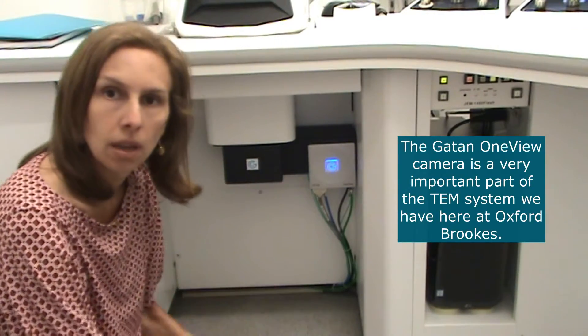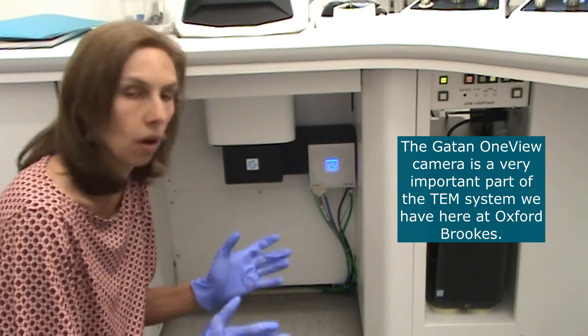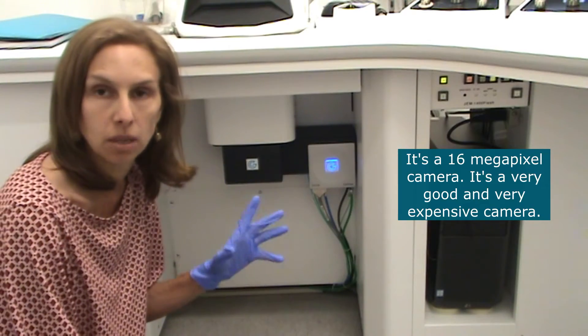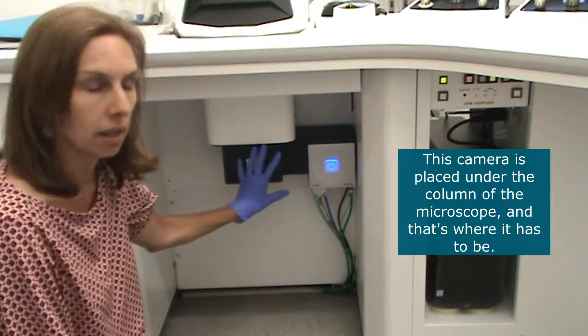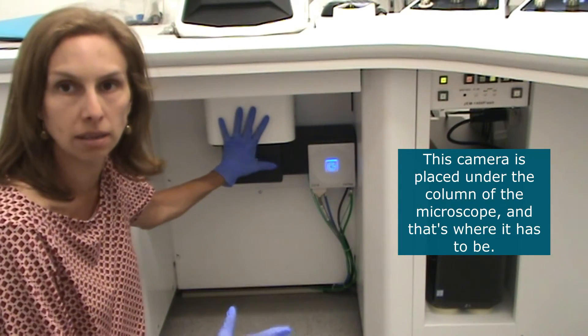The GATAN OneView camera is a very important part of the TEM system we've got here at Oxigroups. It's a 16 megapixel camera. It's a very expensive and very good camera. This camera is placed under the column of the microscope and that's where it has to be.